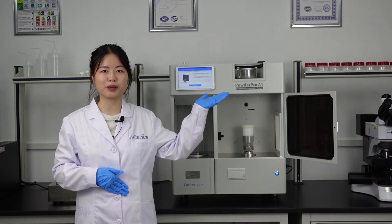In the last video, we measured the bulk density of a non-metallic powder. This time, we are going to investigate the tap density with a fixed volumetric method using the PowderPro A1.